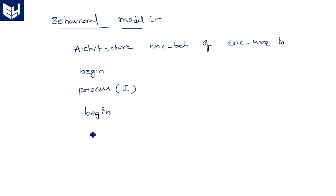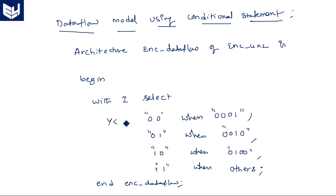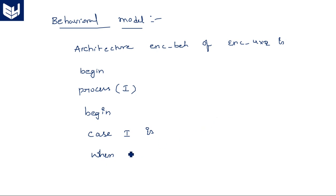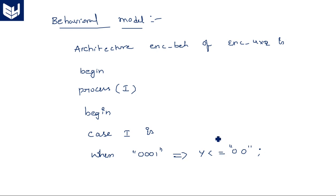Process of I — I is the instance here. Begin process. The conditional statement is case: case I is. Because of the change in I, Y is changed. When I is 0001, that means I0 pin is activated — note the syntax difference: in case-when, the assignment comes after, and a semicolon is needed at the end, whereas in with-select only a comma was used.